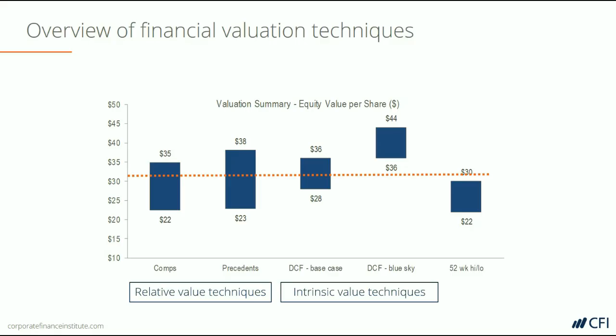The two DCF valuation cases represent the intrinsic value ranges for this company, and on the far right side of the graph we have the 52-week high and low trading prices of the stock, observed for a publicly traded company. The job of a valuation analyst is to step back, look at this chart, and weigh the different methods — the comps, the DCF, the upside and downside — and triangulate on some type of value that makes the most sense. It's not just about arriving at one number; it's about arriving at a range of values and then deciding where within that range the actual value of the business lies.